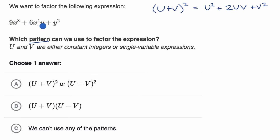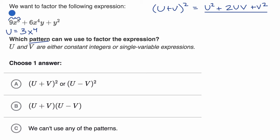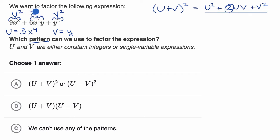When you look at this polynomial right over here, it actually has this form if you look at it carefully. If we view u squared as 9x to the eighth, then u is equal to 3x to the fourth — because if you square that, you get 9x to the eighth. And if v squared is equal to y squared, then v is equal to y. Then this middle term would have to be two times uv. Well, u times v is 3x to the fourth times y, and two times that is indeed 6x to the fourth y. So this term is two uv.